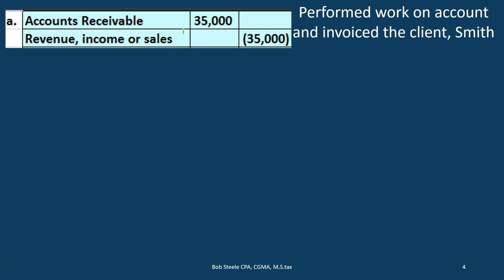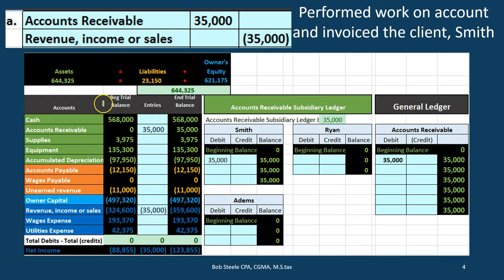We're going to debit accounts receivable by $35,000 and credit the revenue. The accounts receivable debit balance account is going to go up by $35,000. The revenue account also goes up by $35,000 — a credit makes the credit balance go up. What happens to net income? Net income goes up from $88,855 by the $35,000 in revenue to $123,855.